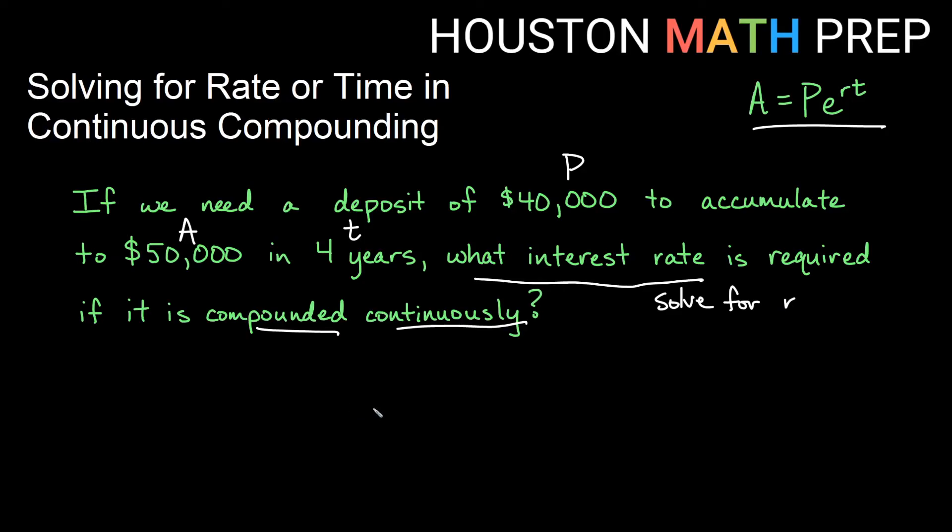If we plug all of that into A equals Pe^rt, then we'll get $50,000 is equal to $40,000, our P, times e to the rt, so times e to the r times four. Okay, so we have $50,000 equals $40,000 e to the r times four.